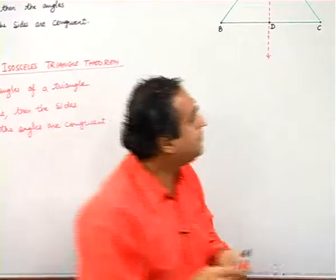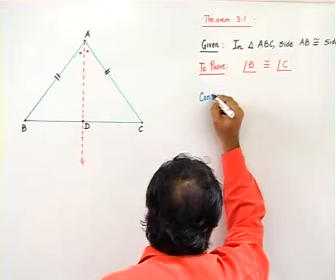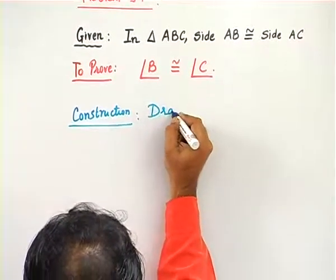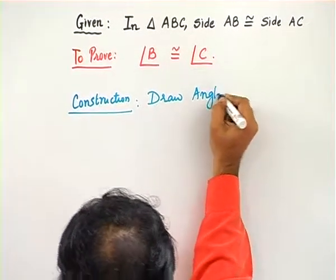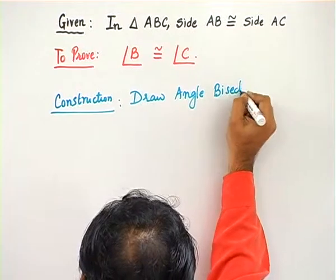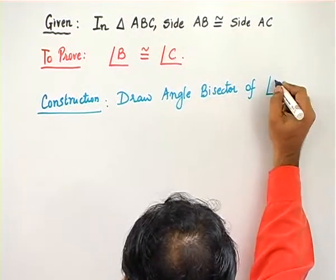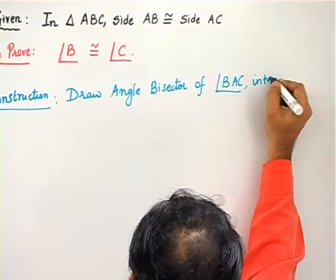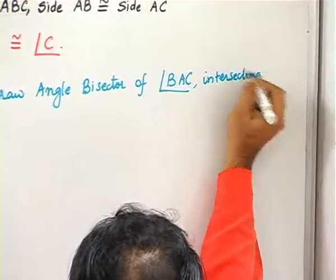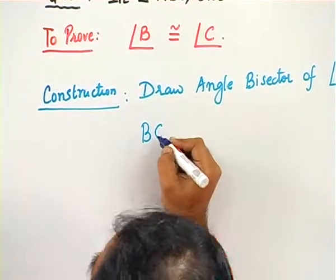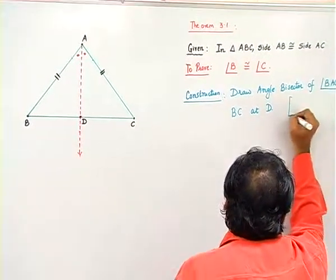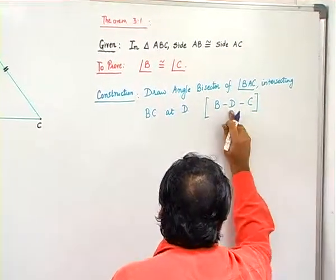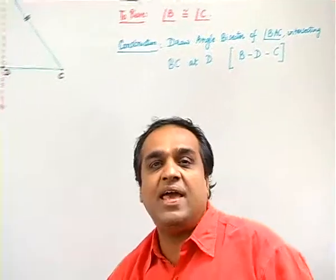So we shall write, construction: draw angle bisector of angle BAC intersecting BC at D. In brackets we will write, B dash D dash C. D lies between B and C.